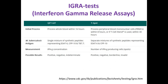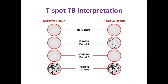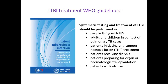Now, moving on to IGRA tests. IGRAs measure a person's immune reactivity to Mycobacterium tuberculosis by stimulating immune cells in vitro. To conduct the test, fresh blood samples are mixed with antigens and controls. The antigens, testing methods, and interpretation criteria for IGRAs are shown in the table. In the case of QuantiFERON, it measures interferon concentration. In T-SPOT, it measures the number of interferon-producing cells. If any of the immunologic tests is positive and active tuberculosis has been excluded, we diagnose latent tuberculosis infection.